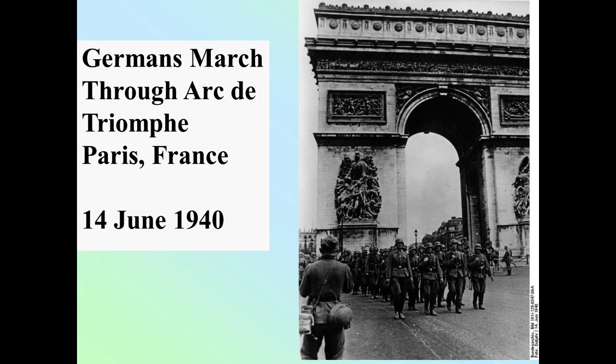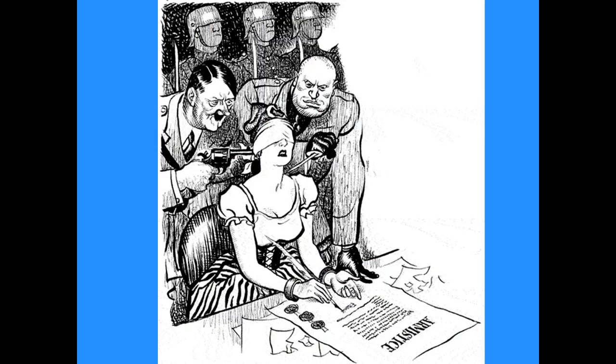The Germans marched through the Arc de Triomphe — a very famous landmark inside Paris. This was again insult to injury, having Germans doing their goose step all the way through there, basically just to insult France and say 'we won.' And here's a cartoon: basically the French maiden signing the armistice with a gun to her head and a knife to her throat.